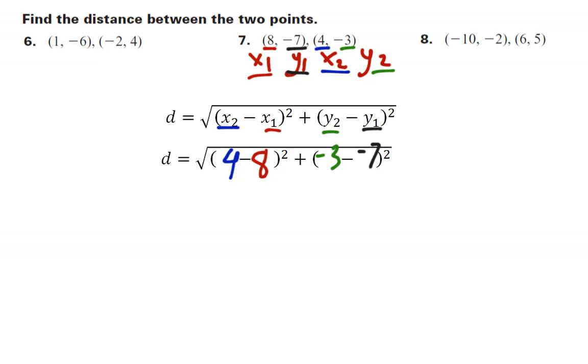Again, notice in this problem, I again have negative back-to-back like that, then minus negative 7. That's going to become plus positive 7 in just a moment when I simplify. So now I'm going to simplify square root of, giving myself a long square root symbol because there's a lot of work underneath there. 4 minus 8 is negative 4. I'm going to square that. And then negative 3 minus negative 7 becomes plus positive 7, so that's positive 4.